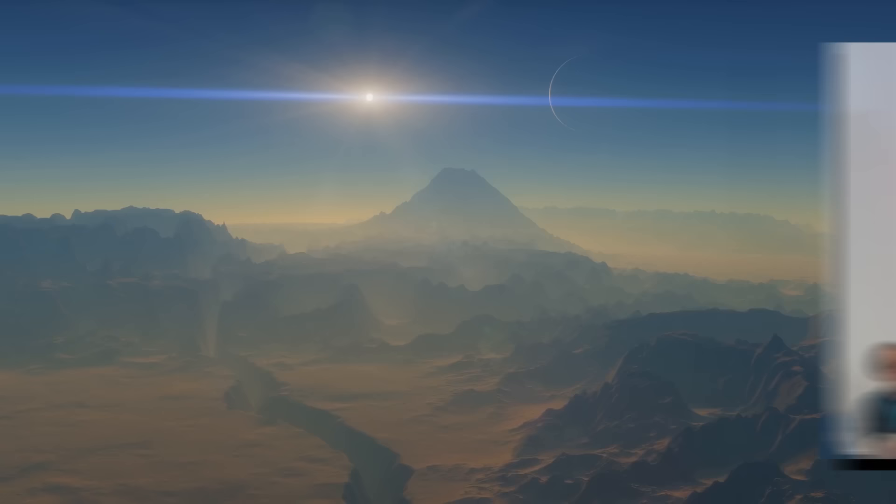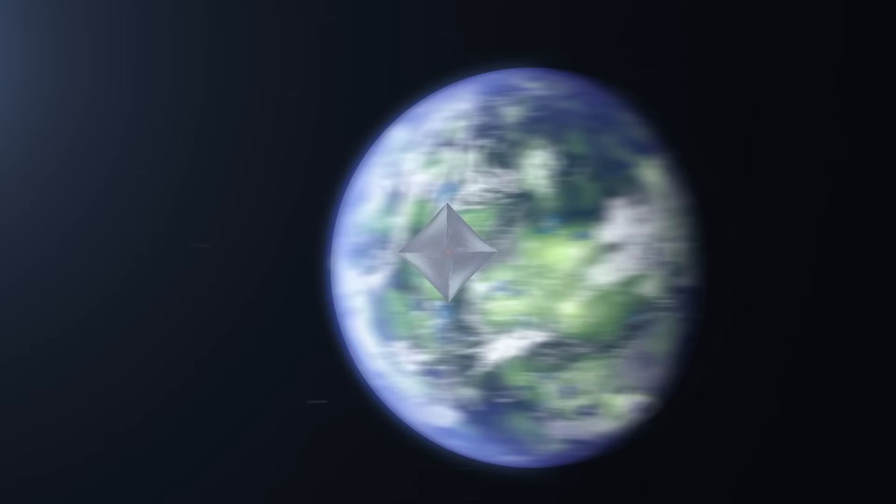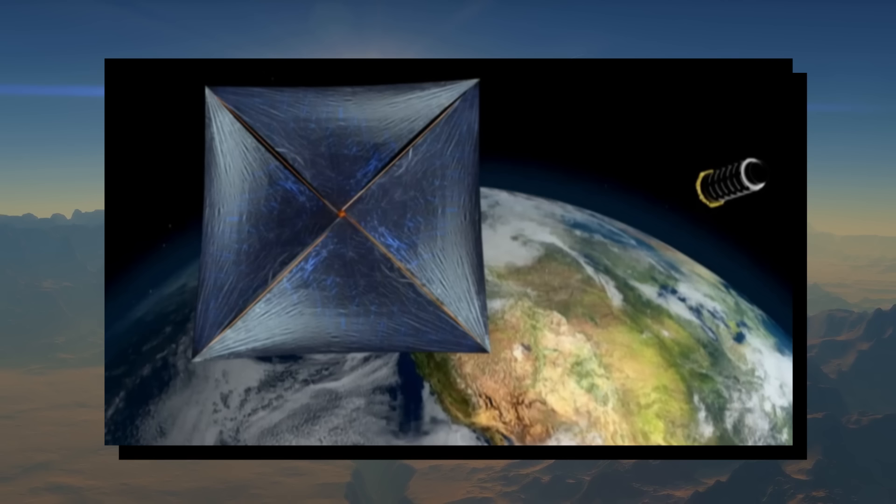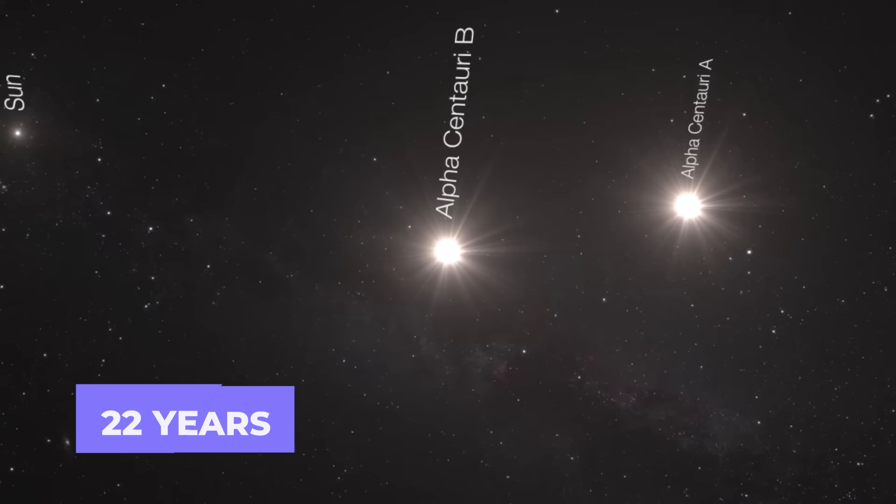The Starshot team wants to advance space exploration. When the lasers stop, the spaceship will zoom through space at 20% of the speed of light. This small spaceship, just a bit bigger than 10 meters, might take 22 years to reach Alpha Centauri.